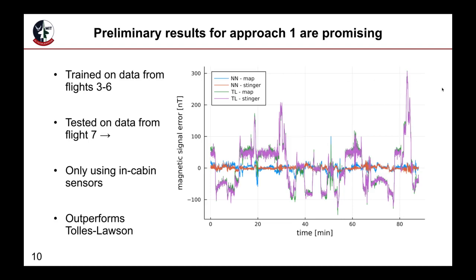Looking at some preliminary results for either of these models, the results are very similar, but in particular the second approach is shown here. We can see that the neural network approach significantly outperforms Tolles-Lawson. So the green and purple are the Tolles-Lawson performance, and the blue and orange are the neural network performance, which has about five nanoteslas of error. An important thing here is that only in-cabin sensors are used for this testing, so no tail stinger measurements are used.